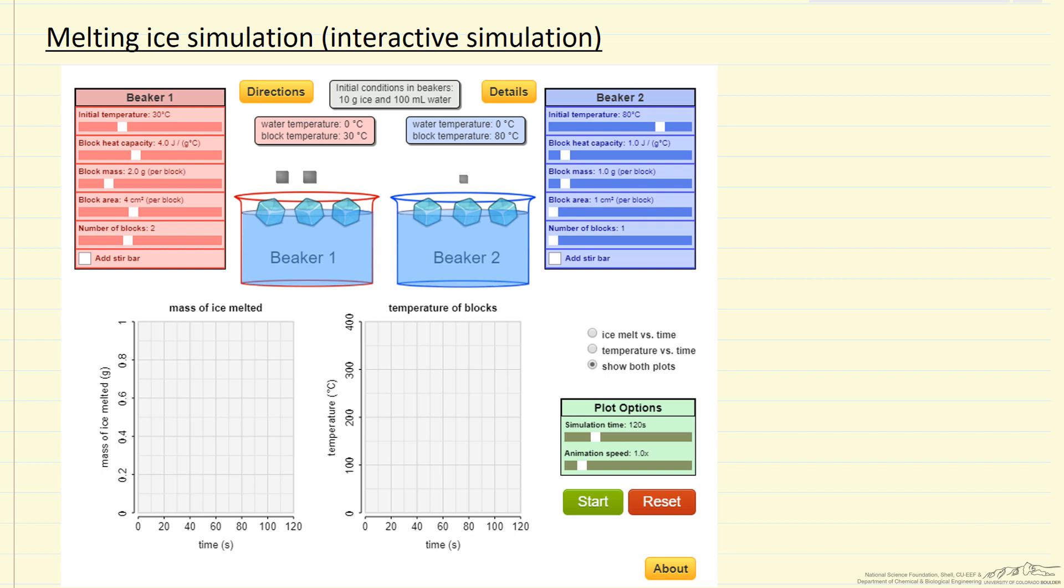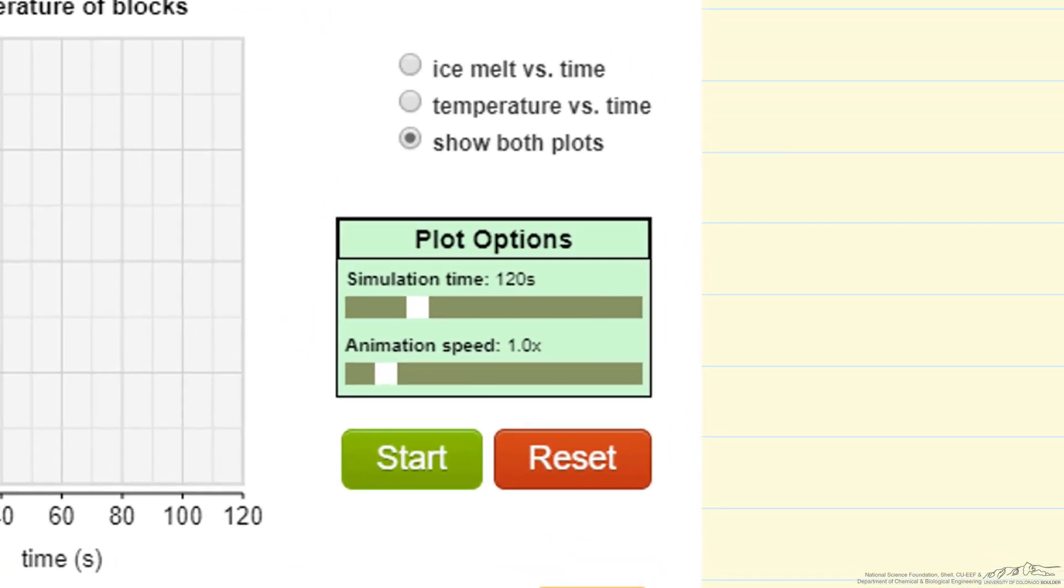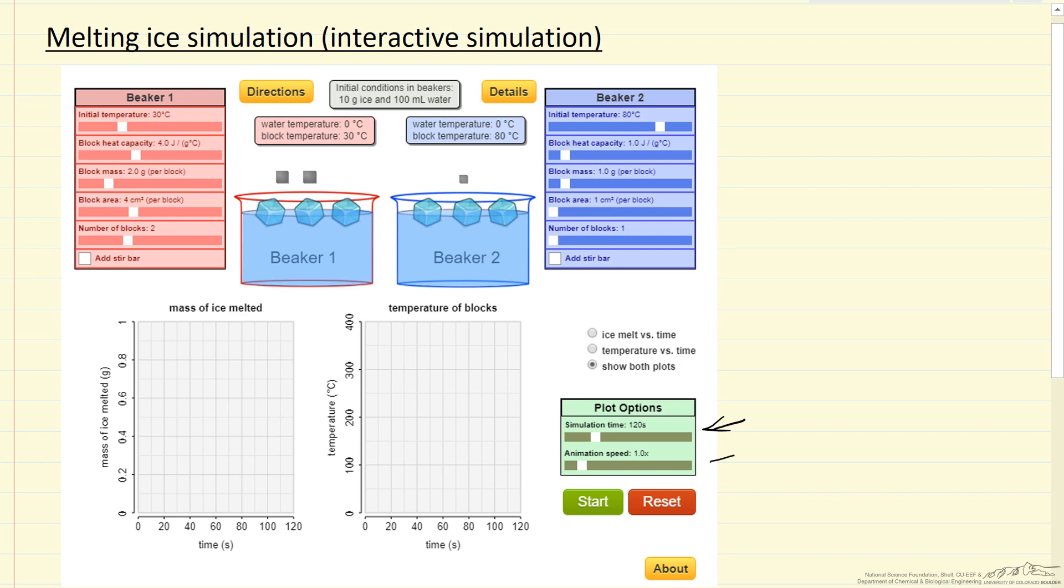So when we hit the start button, we'll see these plots form. We can change how long the plots go. So you'll notice we have 120 seconds here, and that corresponds to the x-axis. We can also change how fast it's displayed on the screen if we want to speed things up so it takes less time to see the behavior.